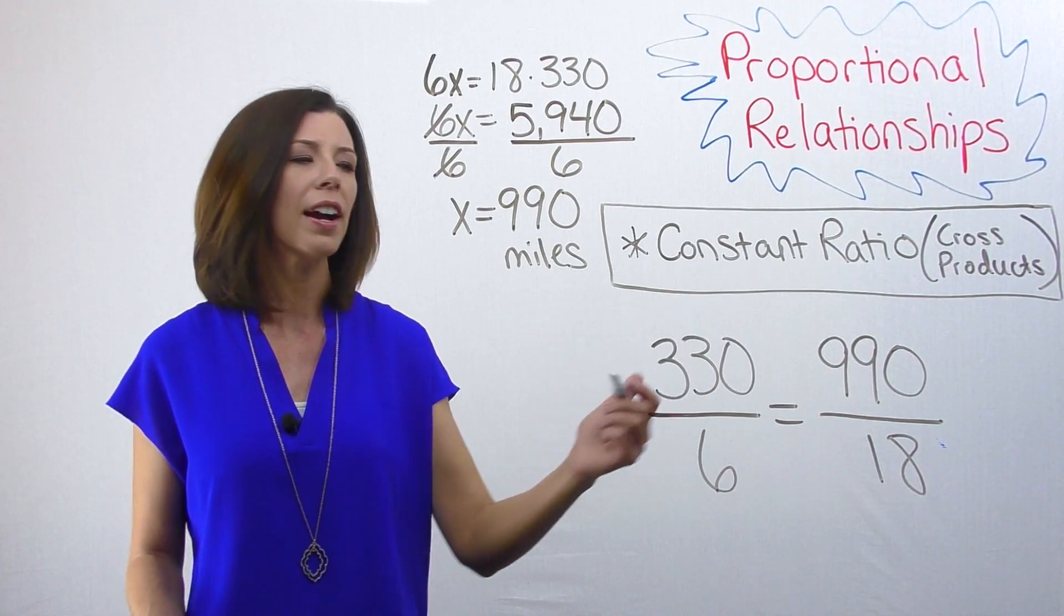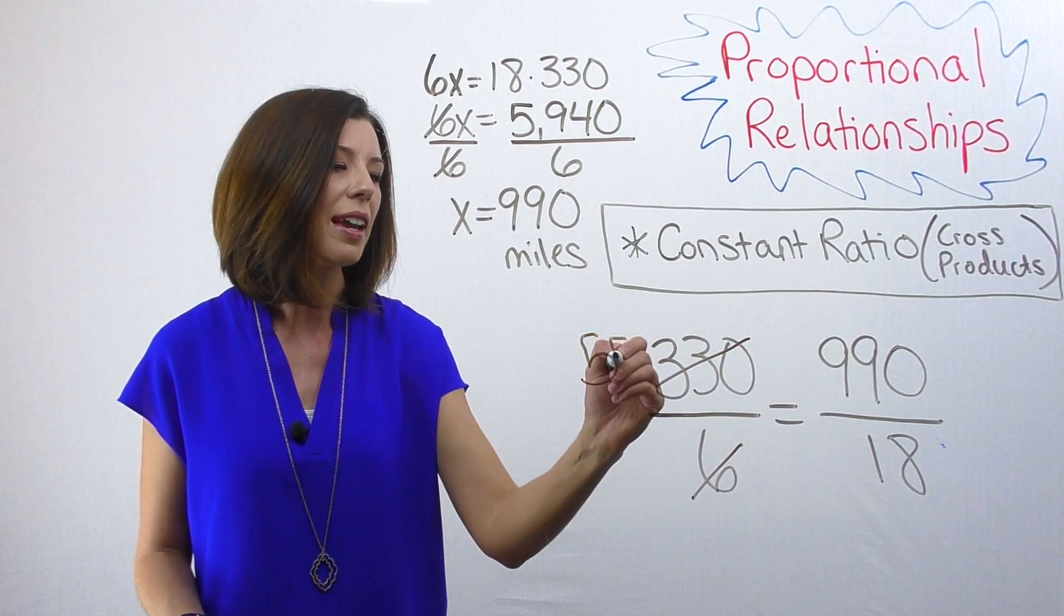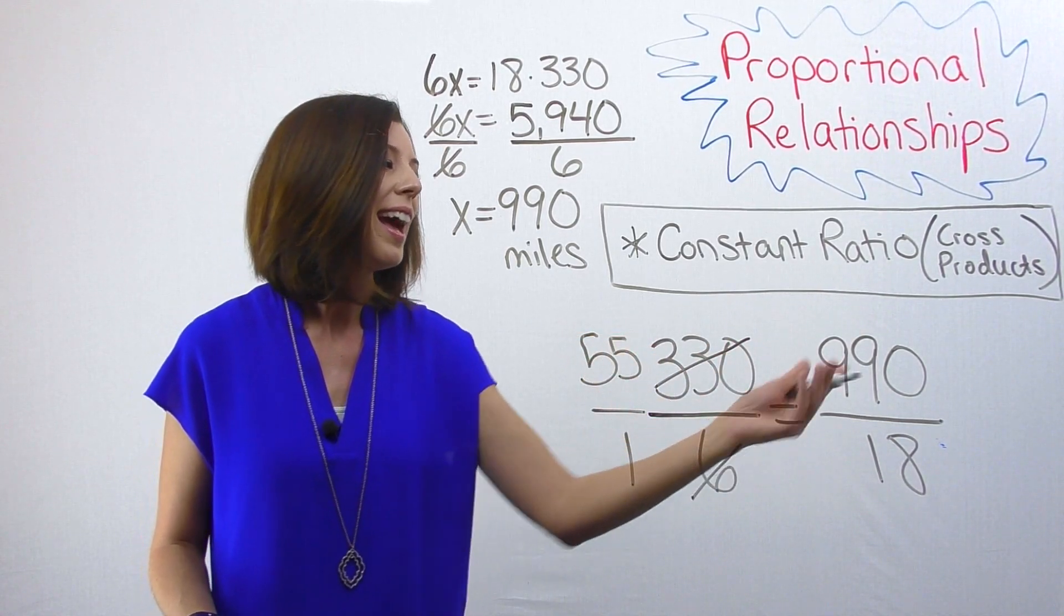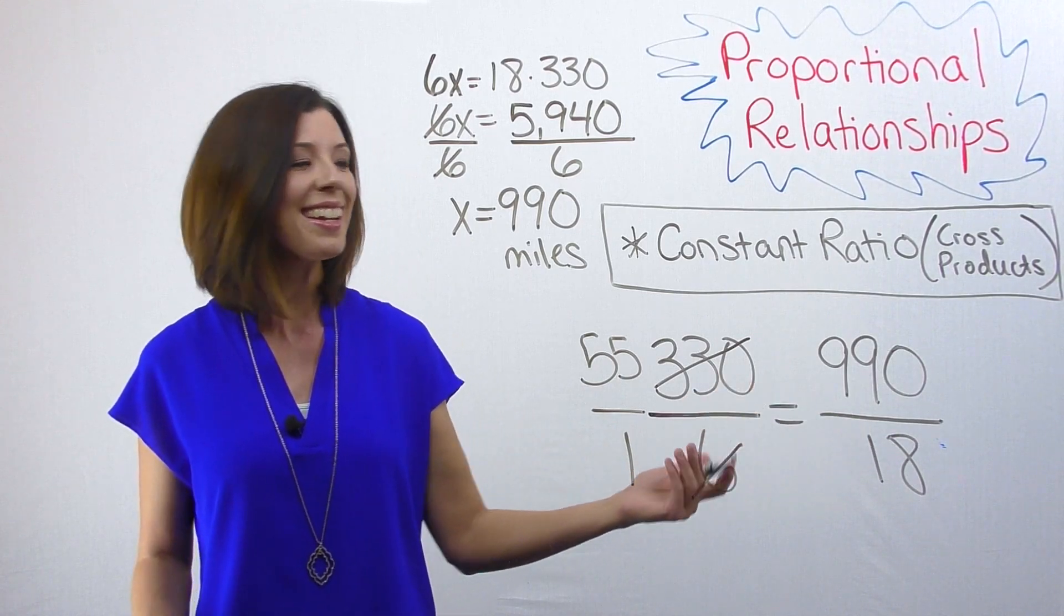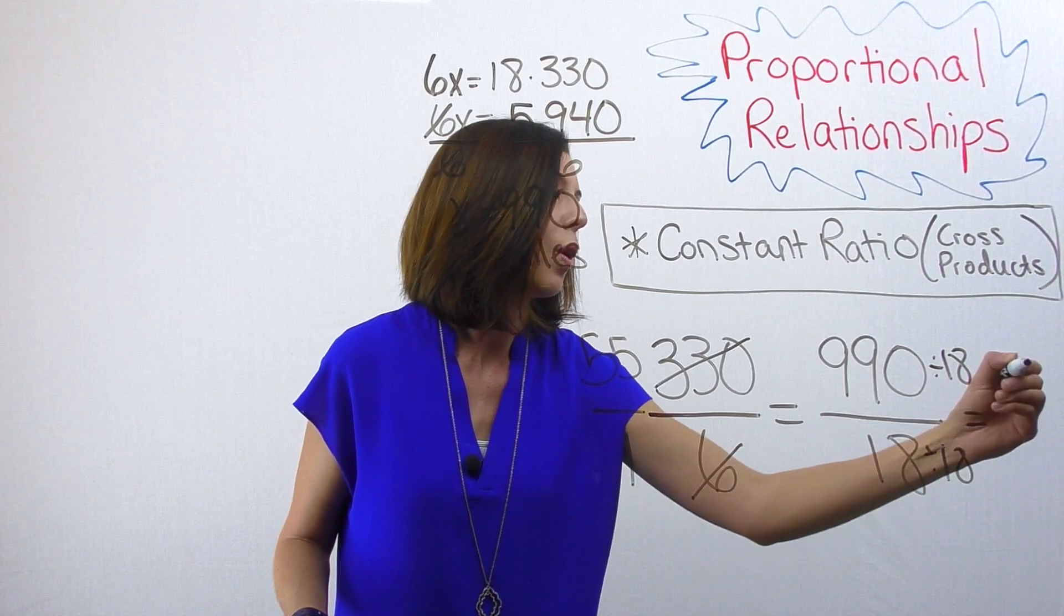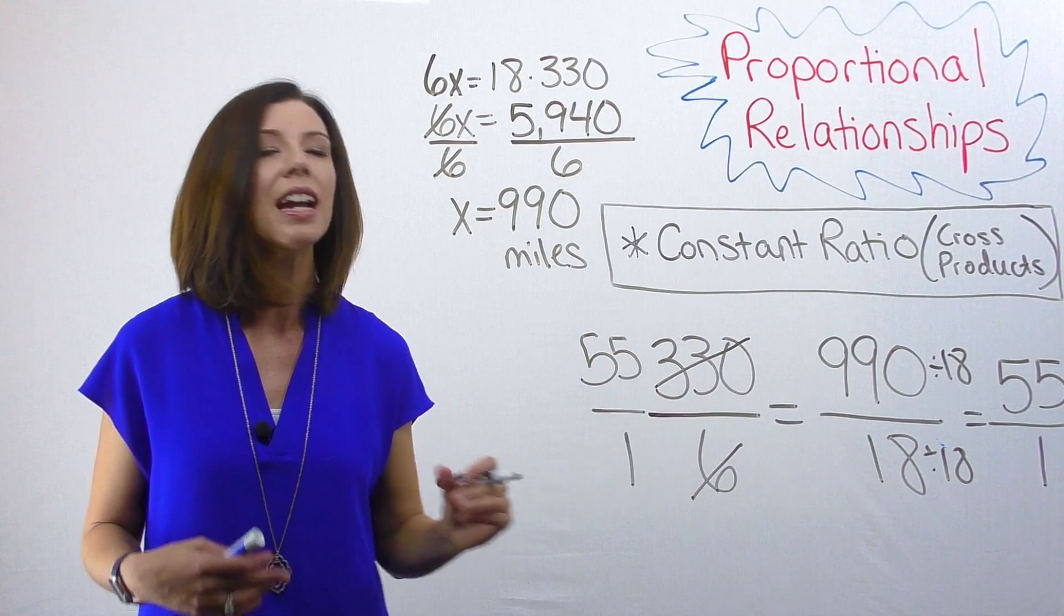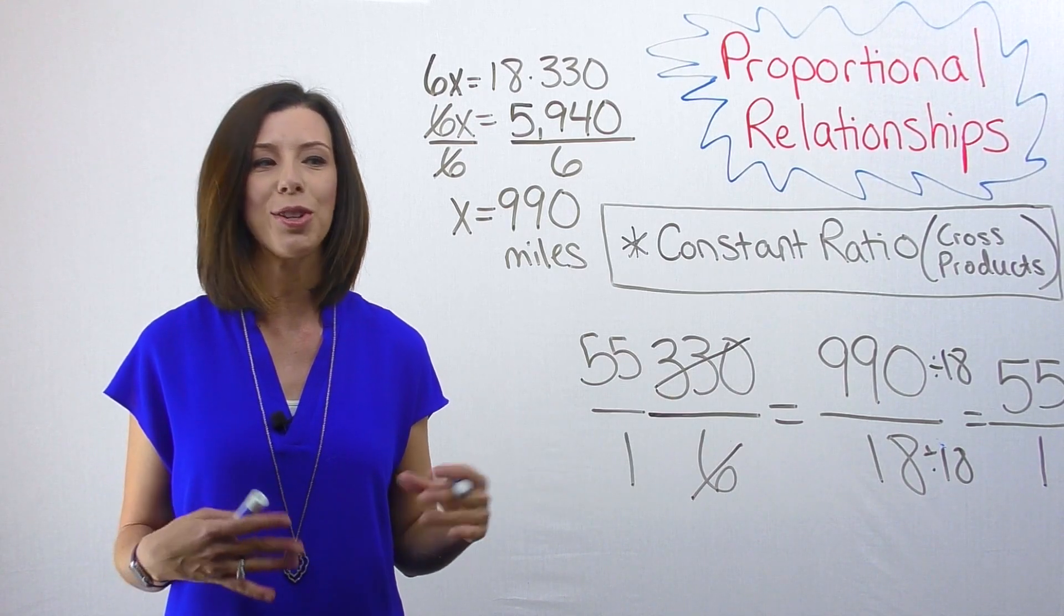If I think about simplifying this, I know that I can divide both of these by six and I'm going to get 55 over one. I can divide both of these by 18, I'm also going to get 55 over one. This is why we call this a constant ratio, because you can see that both of these are the same ratio.